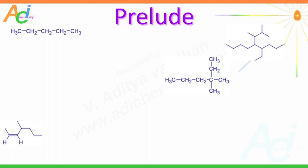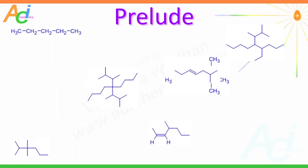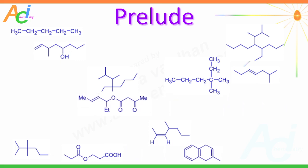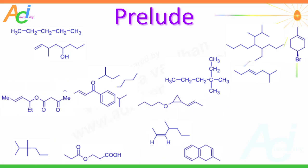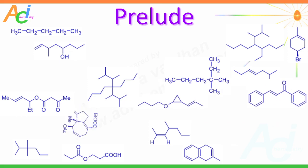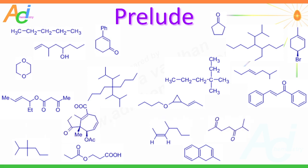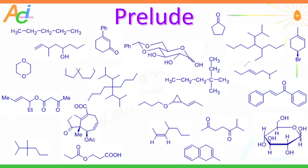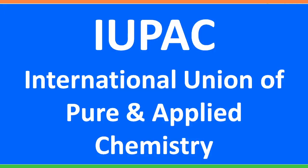Carbon can form millions of organic compounds due to its ability to catenate as well as its ability to bond with other atoms. It can form a variety of chains and rings with different lengths and combinations. Not only are there thousands of naturally occurring organic compounds, there are also several carbon-containing molecules synthesized in the laboratory, and the list is ever-growing. It is no longer possible to remember conventional names based on source or properties, hence the need arises for a systematic approach to name these organic compounds. That led IUPAC, the International Union of Pure and Applied Chemistry, to lay down certain rules to name organic compounds systematically.